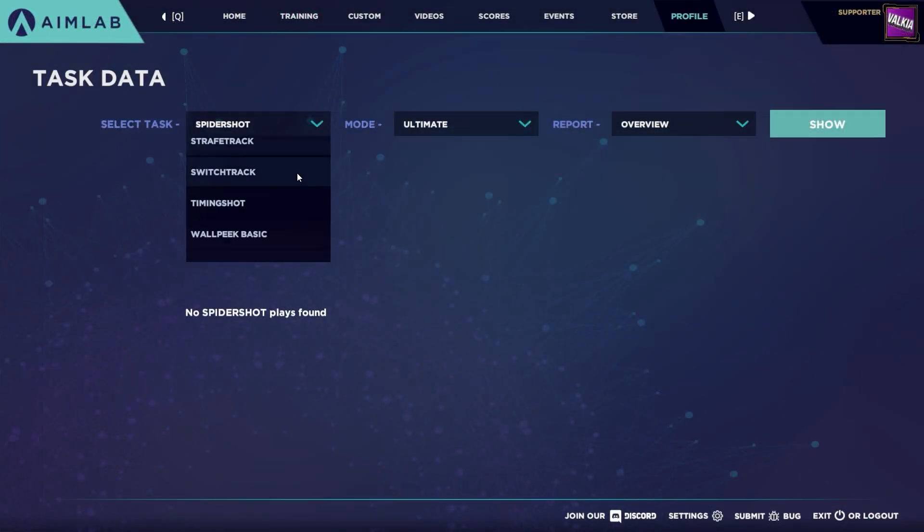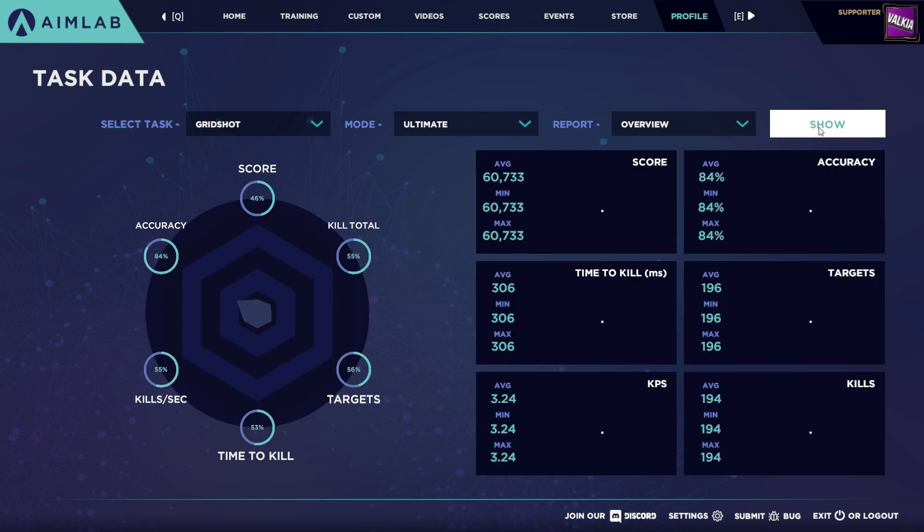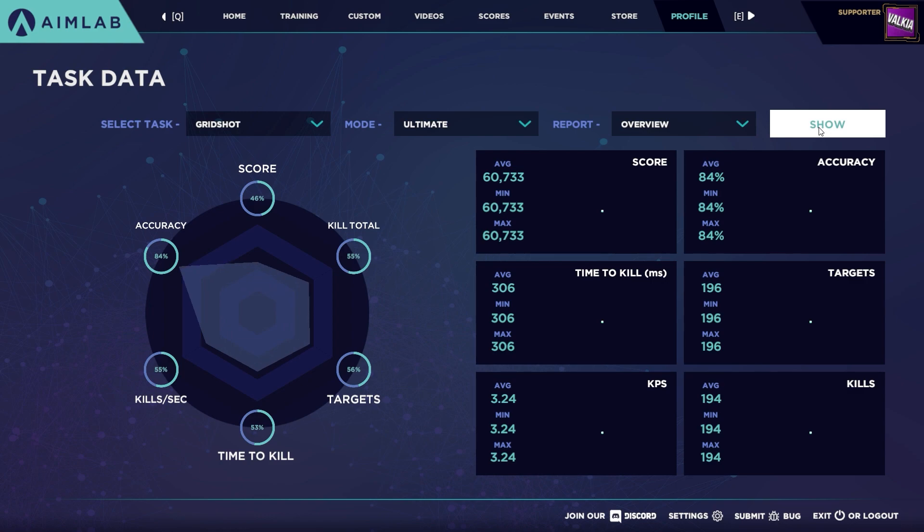At any time, you can go to your profile from the main menu and select task data from different runs to check your performance overview. You can change the task and mode, showing your average and your minimum and maximum runs for that task.